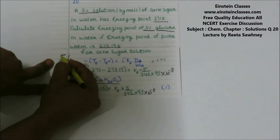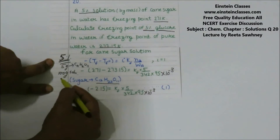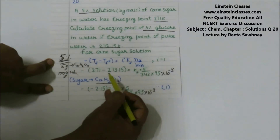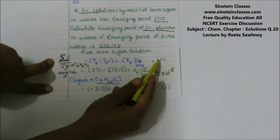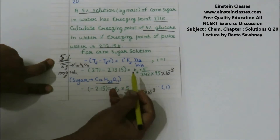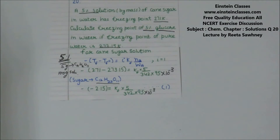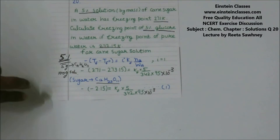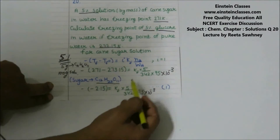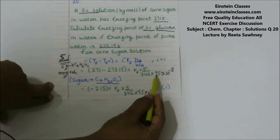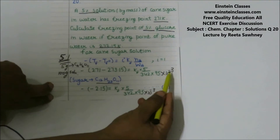For cane sugar, a 5% solution means 5 grams of sugar in 100 grams of solution, so the mass of solvent is 95 grams. The van't Hoff factor i for sugar is 1. The moles of solute (sugar) = 5/342, since the molecular formula of sugar is C12H22O11 with molar mass 342 g/mol.